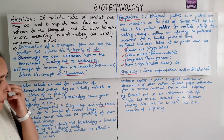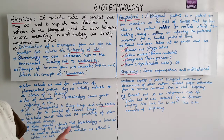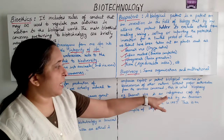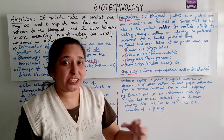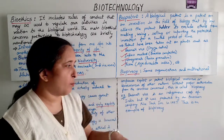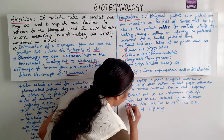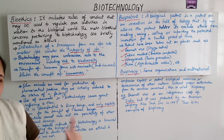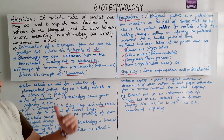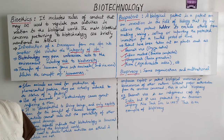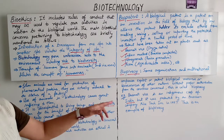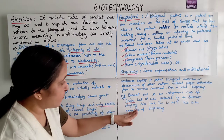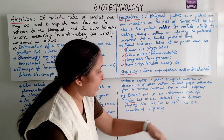One example related to basmati rice: basmati rice is an indigenous crop of India, but it was patented by an American company, Rice Tech, in 1997. This is an example of biopiracy.